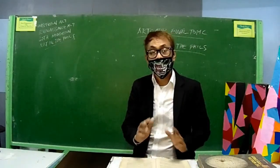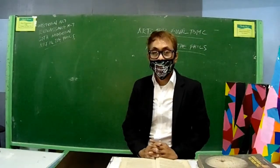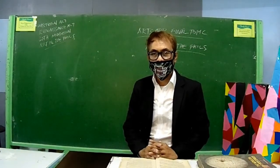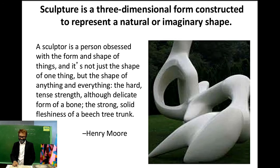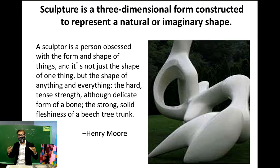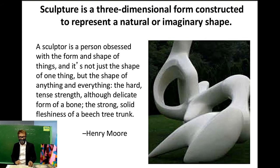Welcome back to our channel, The Art Lover Millennials. This time our topic is on types of sculpture. Before that, we will first define what is sculpture. Sculpture is a three-dimensional form constructed to represent a natural or imaginary shape. A sculptor is a person obsessed with the form and shape of things — not just the shape of one thing, but the shape of anything and everything: the hard, tense strength of a bone, the strong, solid fleshness of a beach tree trunk, according to Henry Moore.